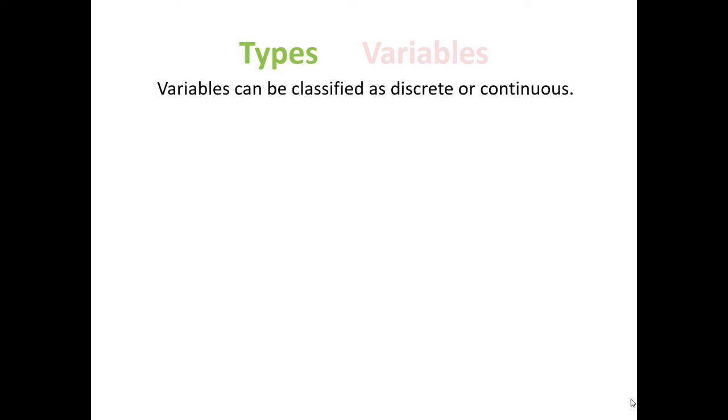What a variable is, it's a characteristic of something, so variables can be classified as discrete or continuous.